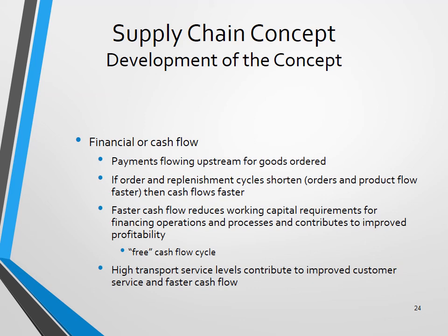Cash flows from downstream to upstream in normal transactions: consumers pay retailers, retailers pay distributors, distributors pay producers, and producers pay suppliers. This is the general pattern of cash or finance flow. However, cash can also flow in the other direction during reverse logistics — when goods are returned, they move upstream and the cash flows back downstream to the consumer.